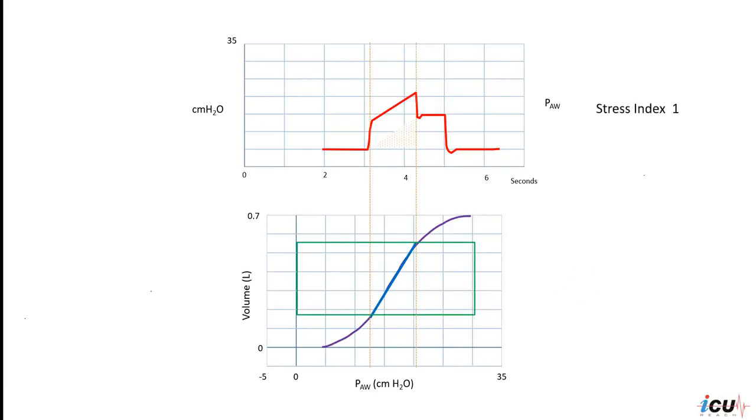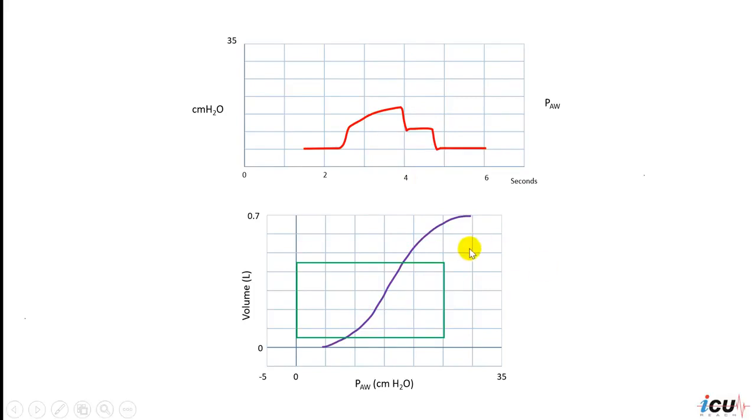In contrast to this example, the pressure tracing is convex. The stress index, you can see here, corresponds to the lower part of the PV curve and indicates probable lung derecruitment.